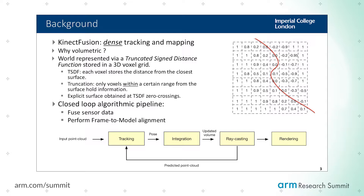Below you can see the algorithmic pipeline of this algorithm, which is a closed loop. You get an input point cloud from the depth sensor, you align it with the previous point cloud so you can recover your position, and once your position is recovered you can fuse the new data into the representation. The next step is to render the world you have just observed so that you can use this prediction to align with the next frame, and this goes on in a tight loop.